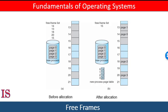The first page of the process is loaded into one of the allocated frames, and the frame number is put in the page table for this process. The next page is loaded into another frame, and its frame number is put into the page table, as you can see in this figure — another view of that free/busy list or memory map table.